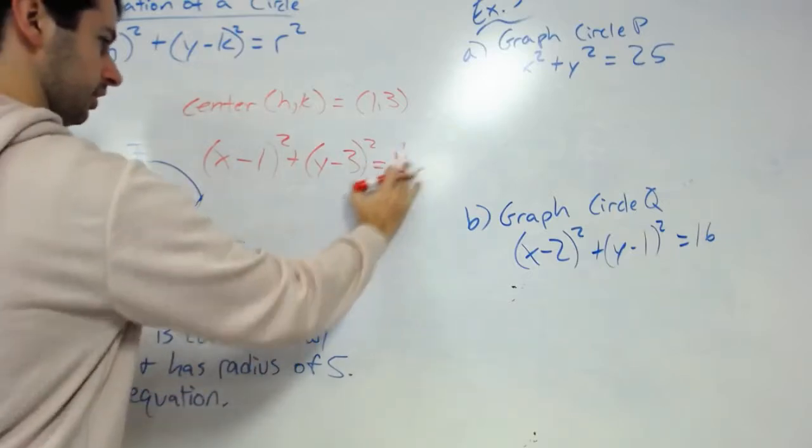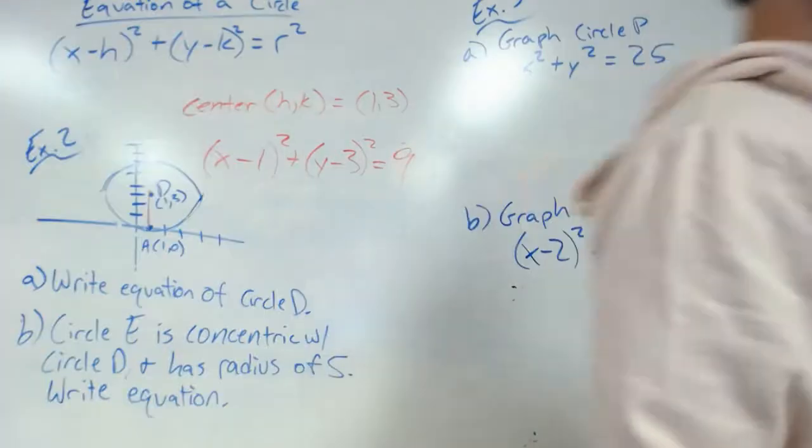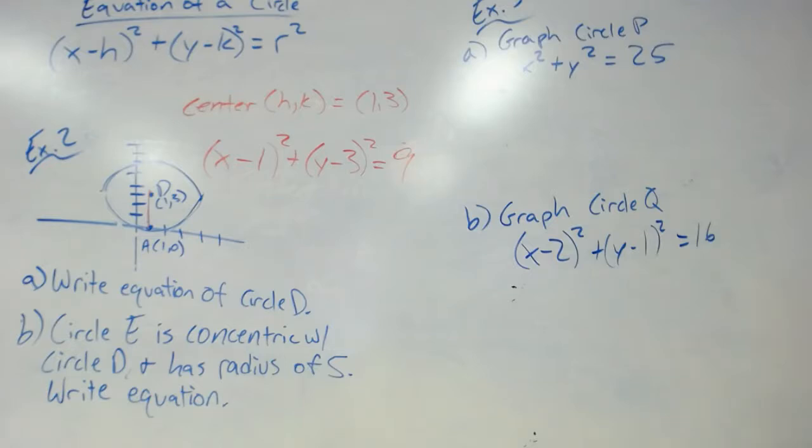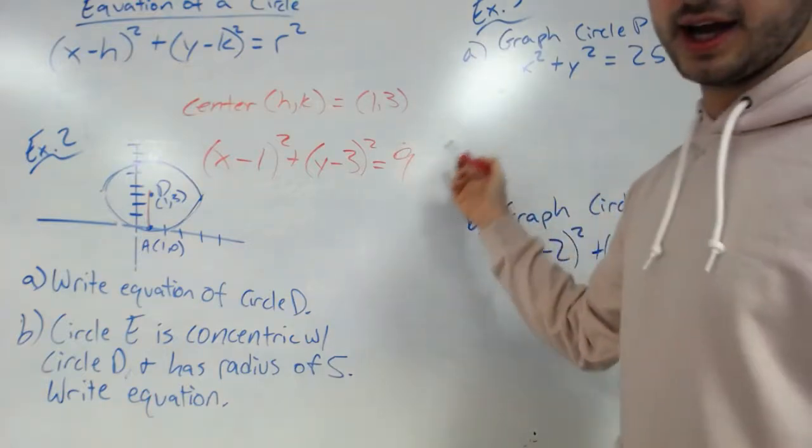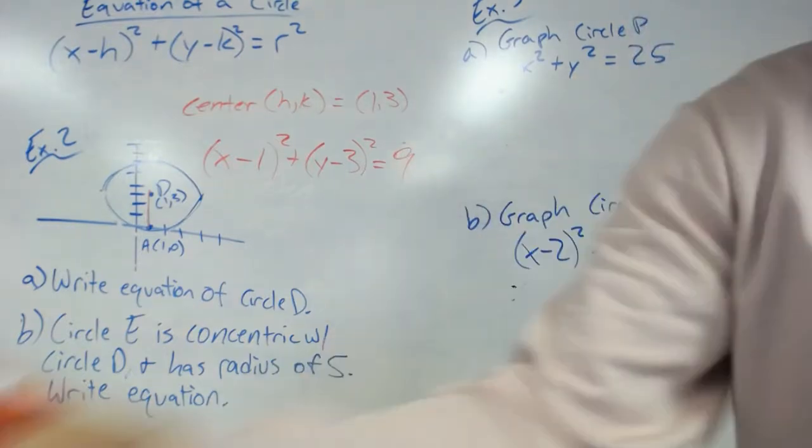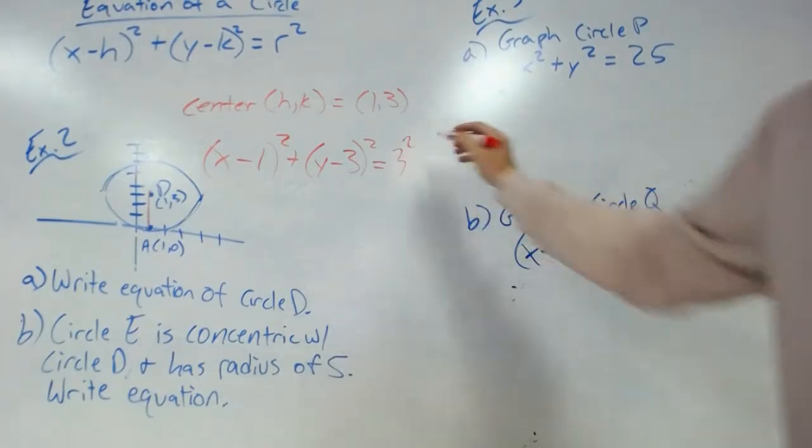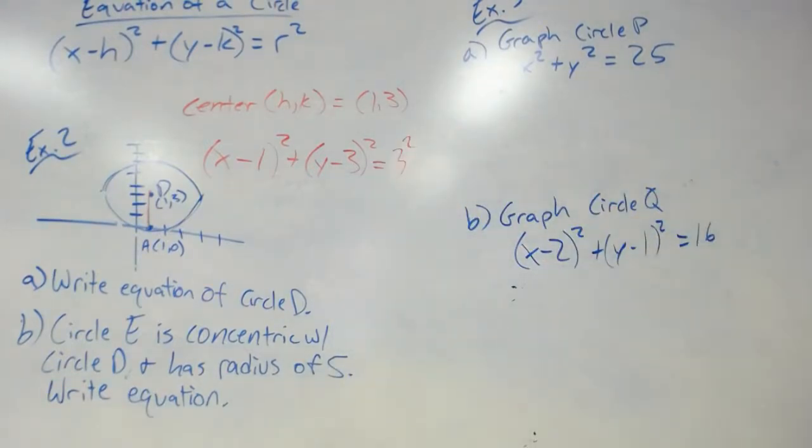Your equation of the circle here would be (x - 1)² + (y - 3)² = 3² or 9. The book actually leaves it as 3 squared, so either way would work. That's how you do the equation of circle D.